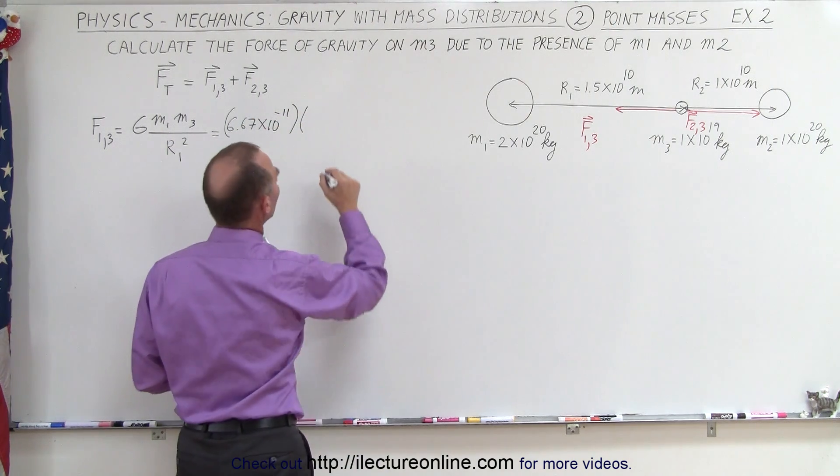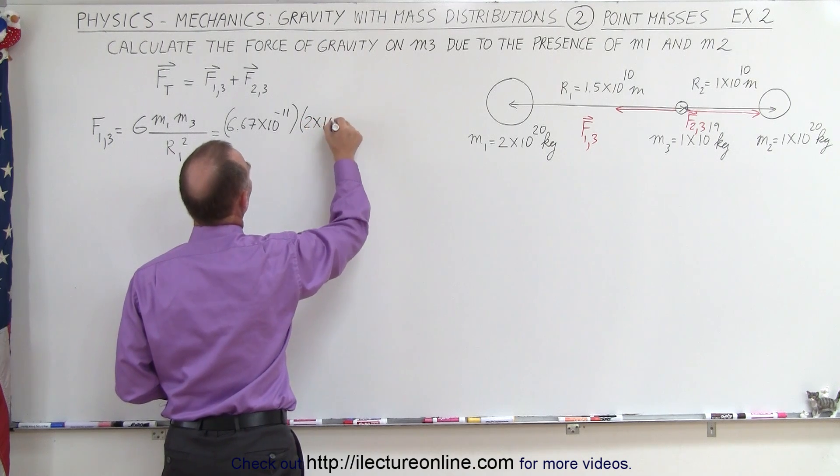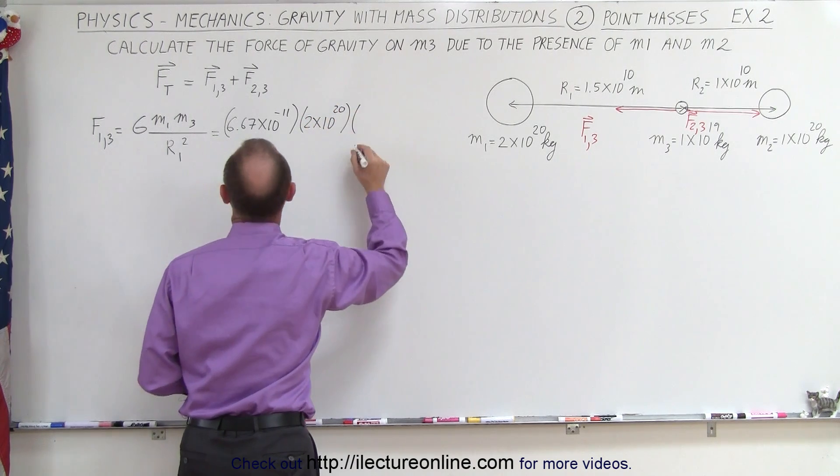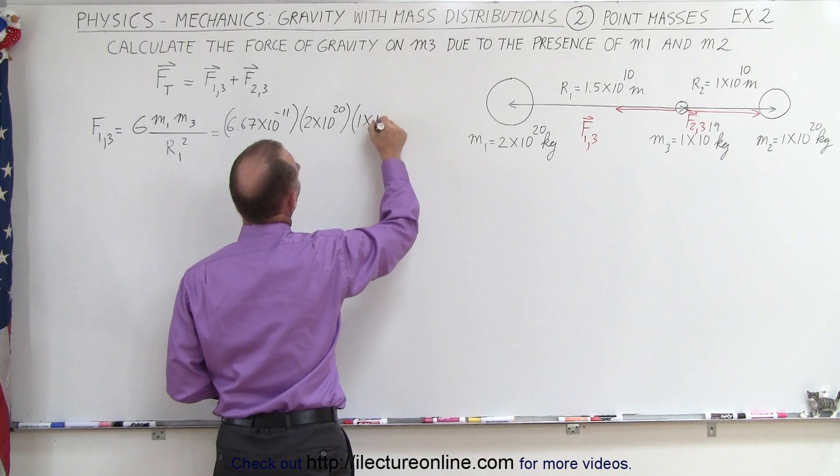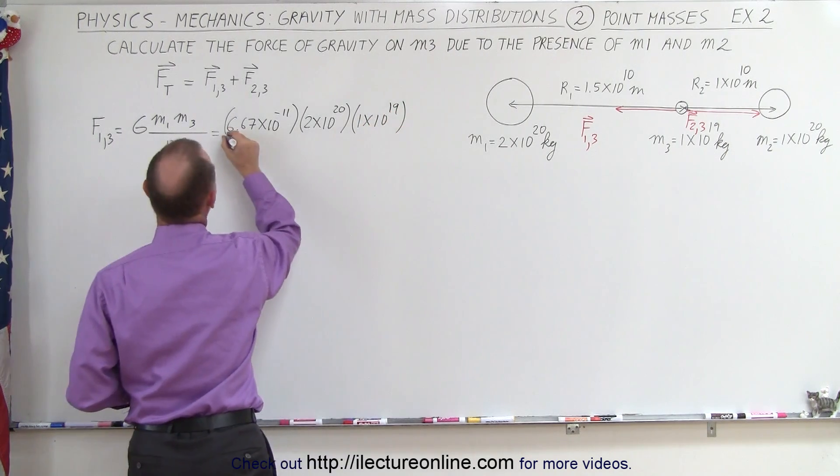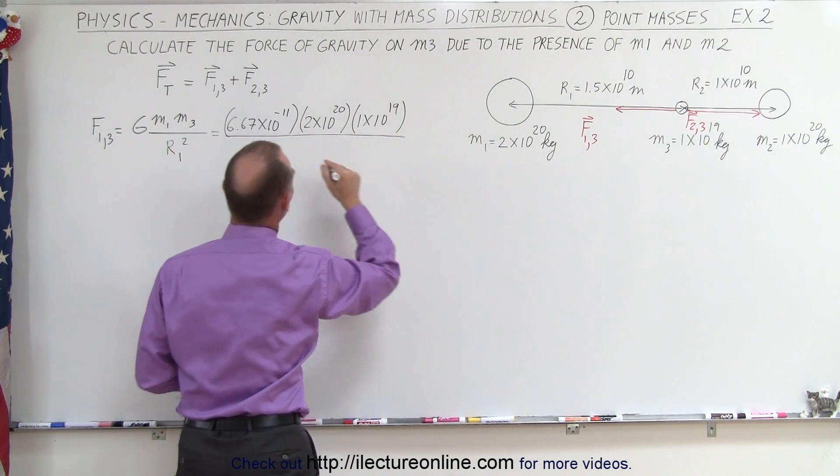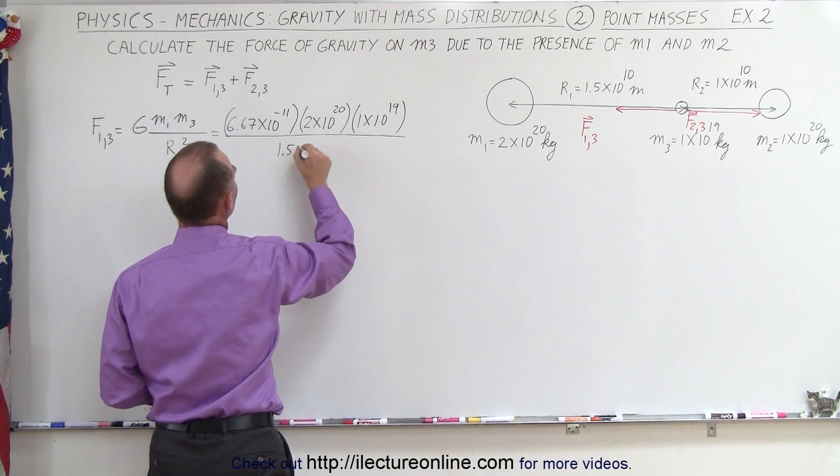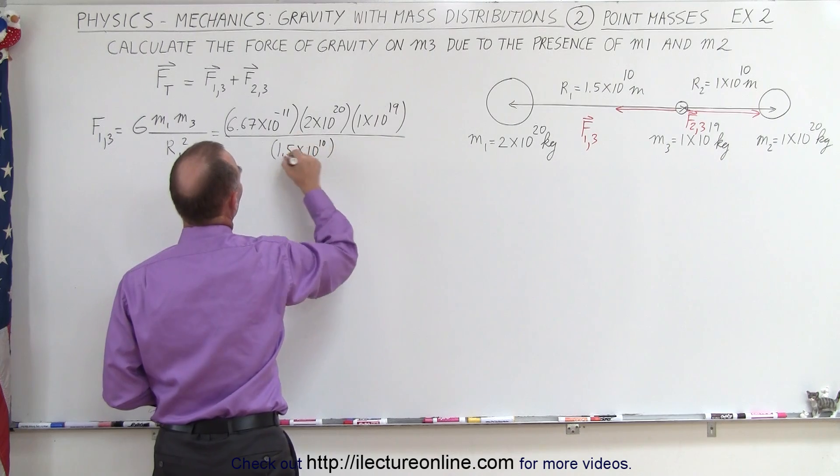Here we have m1, which is going to be 2 times 10 to the 20th, and m3, which is 1 times 10 to the plus 19th. And divide the whole thing by r1 squared: 1.5 times 10 to the 10th squared.